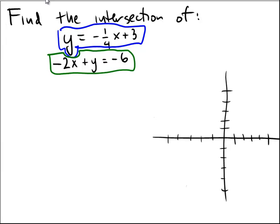Let's try to find the intersection of the lines y equals negative 1 fourth x plus 3 and negative 2x plus y equals negative 6. Although it's not necessary, I'm going to take that second equation and I'm going to add 2x to both sides.